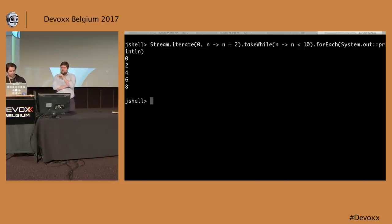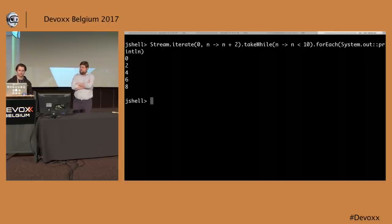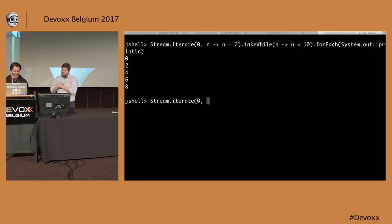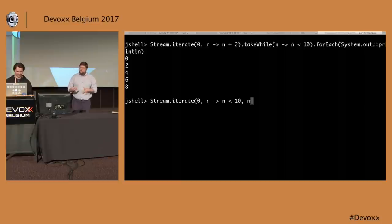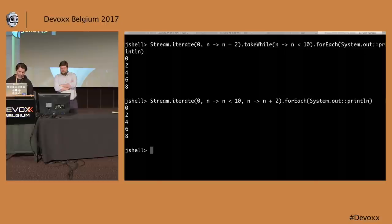Some languages have list comprehension — giving a predicate to bound a generated list plus a function to get the next entry. Java 9 adds a new overload of Stream.iterate that takes a predicate argument, using it to filter elements with a short-circuiting property, so we don't get an infinite stream. This replaces the pattern of iterate plus takeWhile in one call.